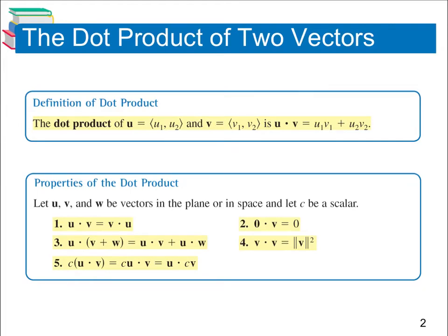Today we're going to go over section 6.4, which is all about the dot product. We can take the dot product of two vectors, written as u dot v. You're not multiplying in the traditional sense — we multiply the first components together and add that to the product of the second components. When you take the dot product of two vectors, you end up getting one number.